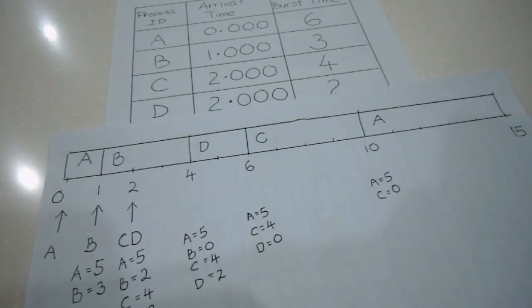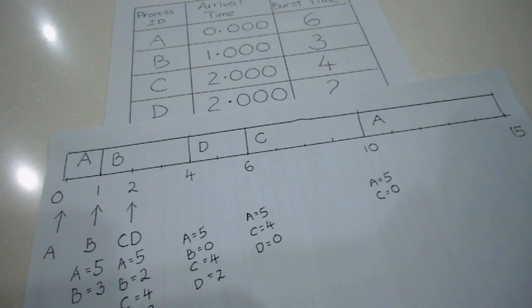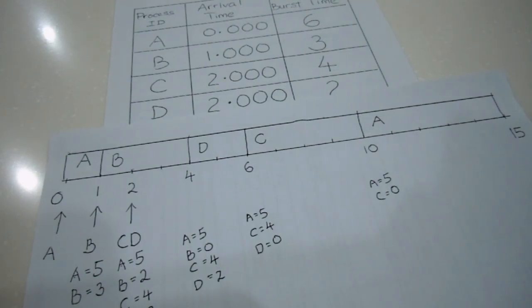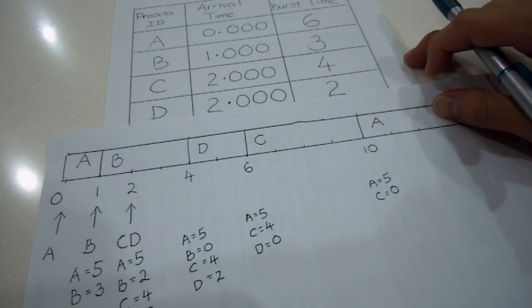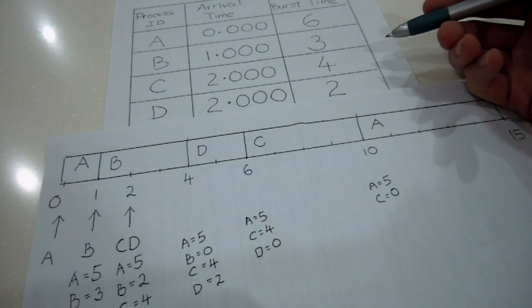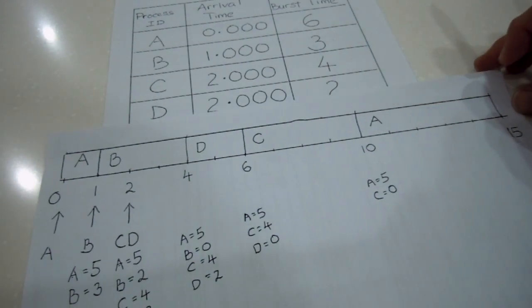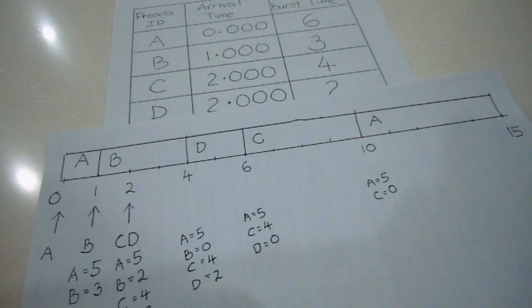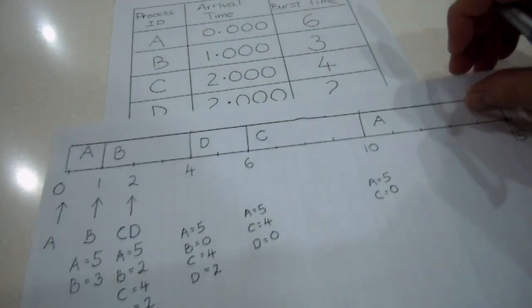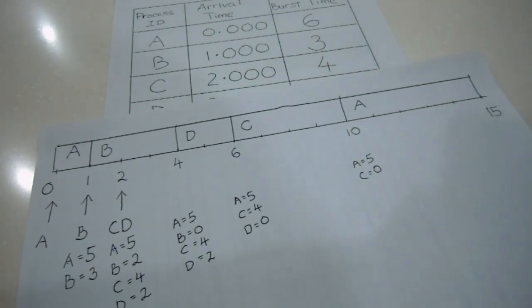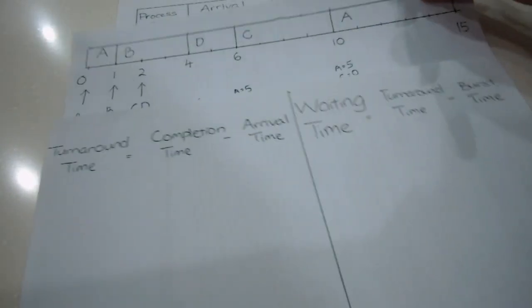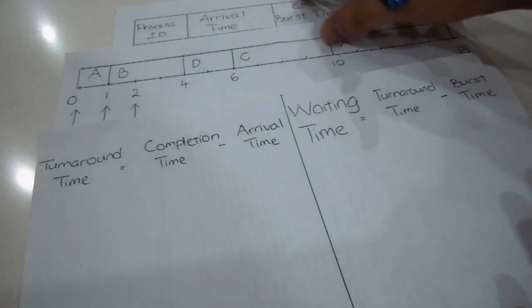Hi, I'm going to share with you how to calculate the average turnaround time and average waiting time. What I have here is a Gantt chart that illustrates the shortest remaining time first. It doesn't matter what scheduling algorithm you have, as long as you have a Gantt chart, the calculation process is the same. I'm going to have the formula here, but I need a Gantt chart here.